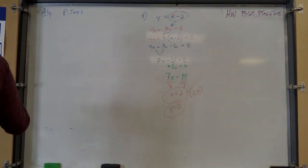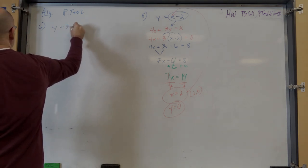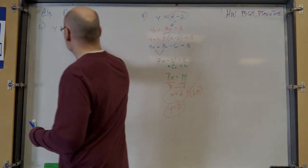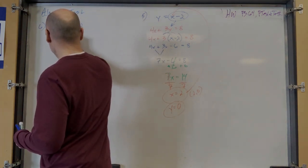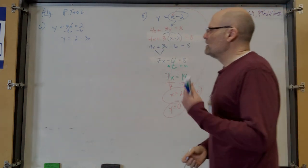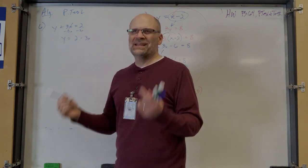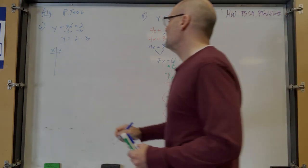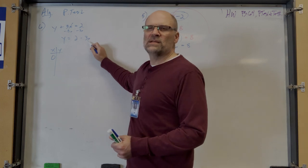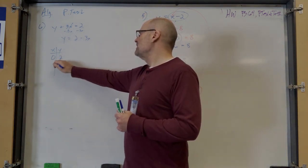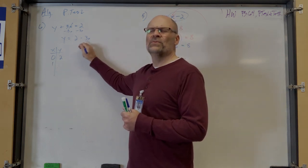Number six: graph y plus 3x equals 2. It's easier to get one variable by itself first — get y alone. So y equals 2 minus 3x. Now pick easy x values. If x equals 0, y equals 2 minus 0, which is 2.